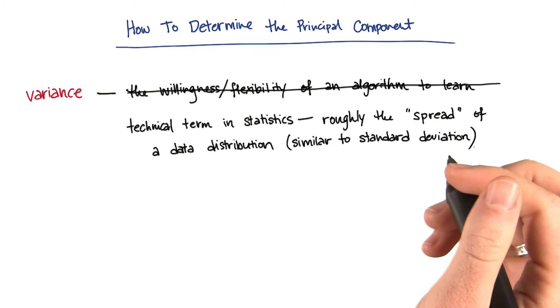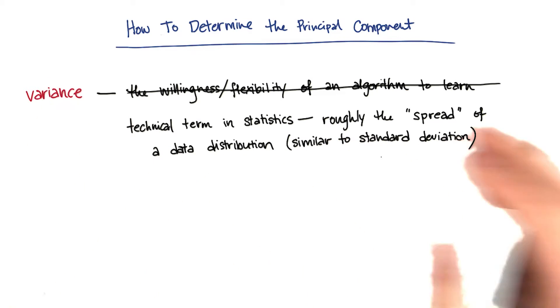Variance is also a technical term in statistics, which means roughly the spread of a data distribution. It's something that's very similar to the standard deviation if that's something that you're familiar with.